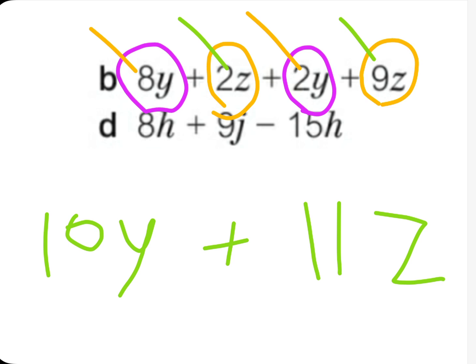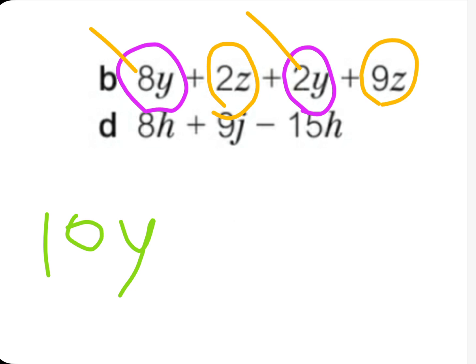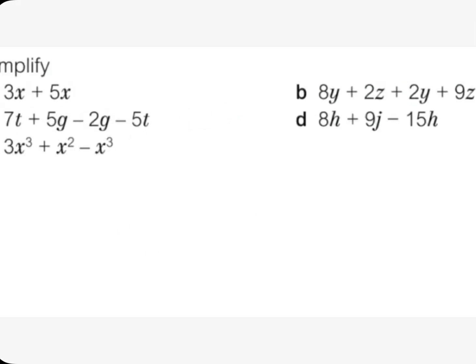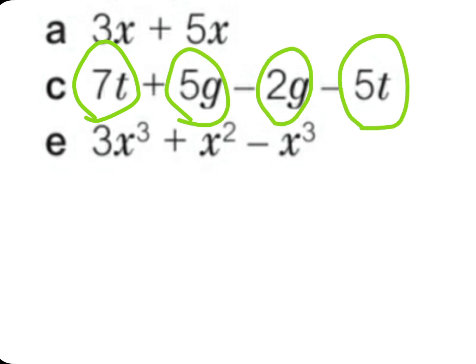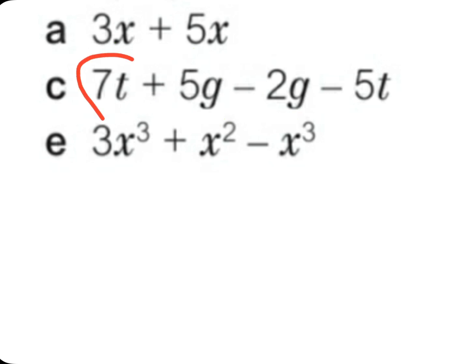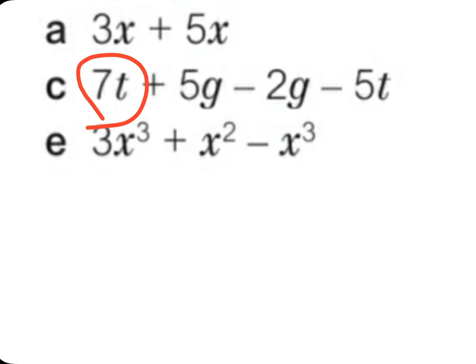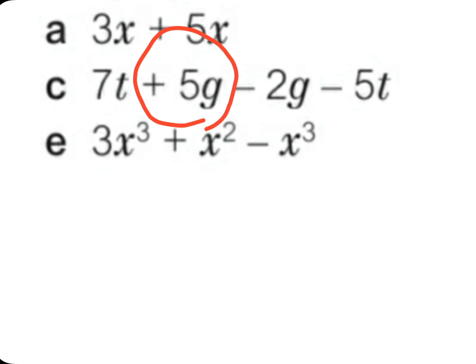Now let's check question C. Question C has 7t plus 5g minus 2g minus 5t. Focus here because we have plus and minus. The same idea applies — we take the same variables together and use the sign between them. Each number has a sign before it: the sign belongs to the term that follows it.